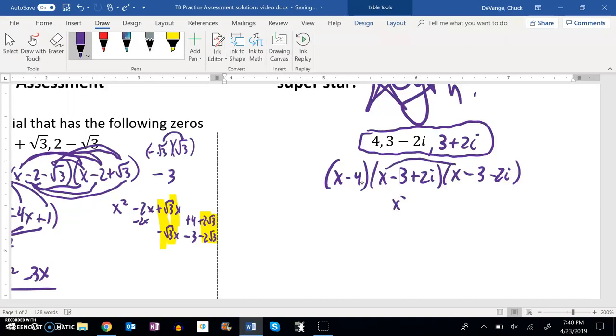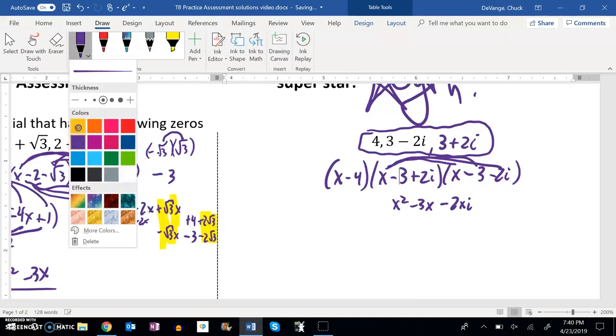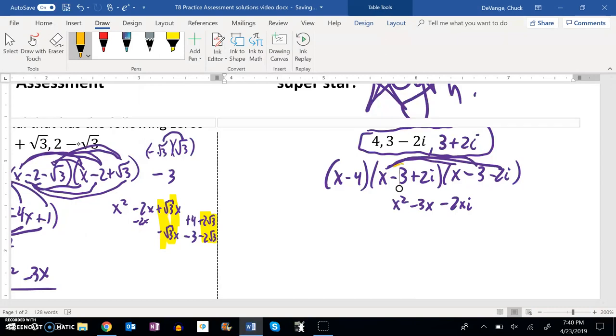So let's see. x times x is x squared. x times negative 3 is negative 3x. x times negative 2i is negative 2xi. I'm going to distribute this negative 3 now. Negative 3 times x is negative 3x. Negative 3 times negative 3 is positive 9. And then negative 3 times negative 2i. A negative times a negative is positive. So that's positive 6i.